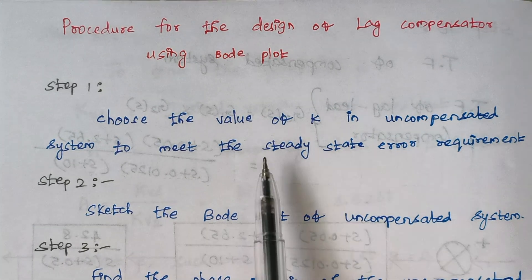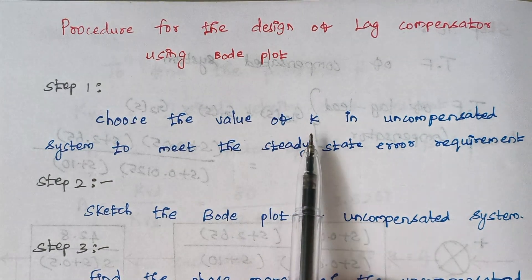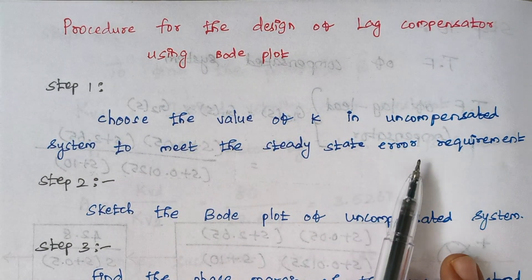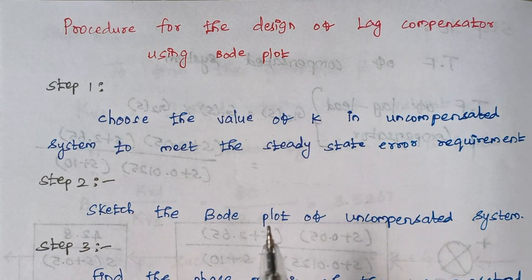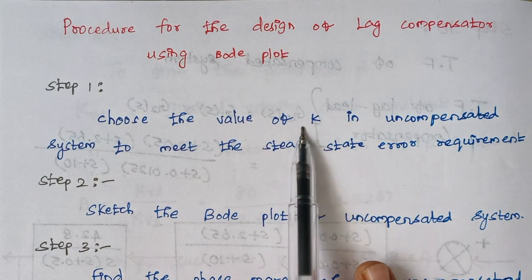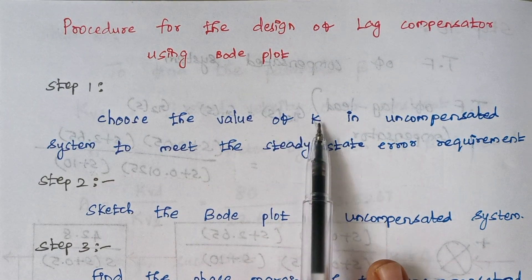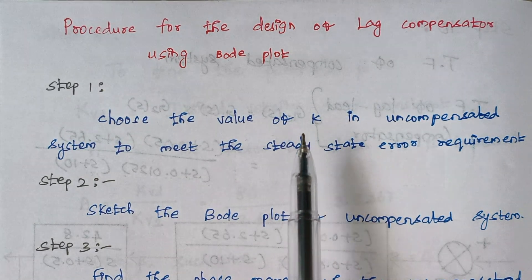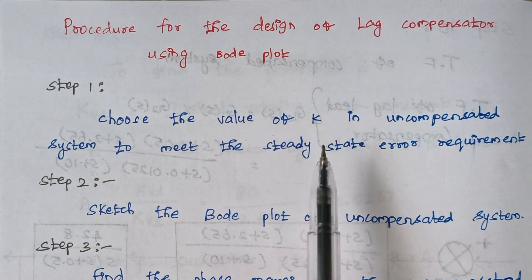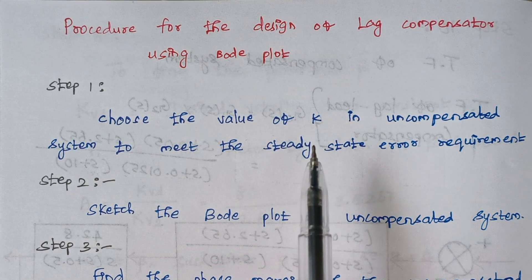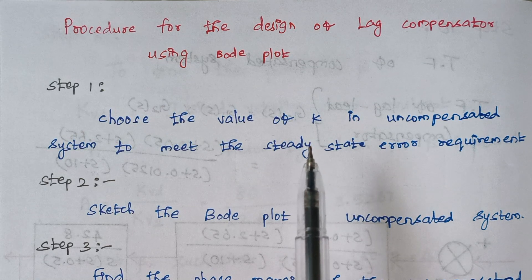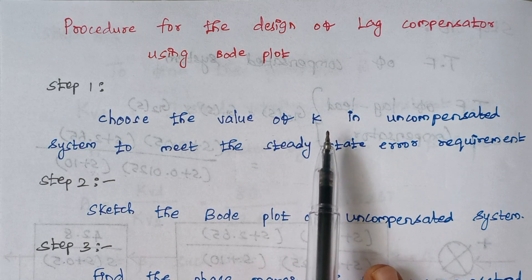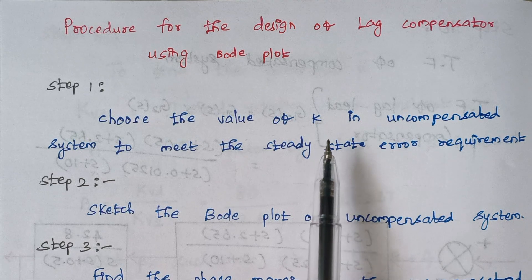The first step is to choose the value of K in the uncompensated system to meet the steady state error requirement. There will be some terms given in the problem, and using those, we have to find the value of K. That is step number 1.